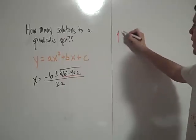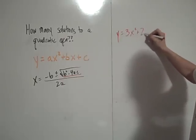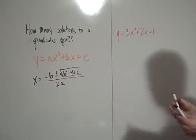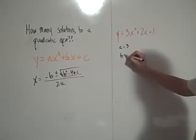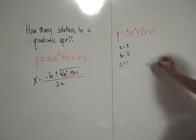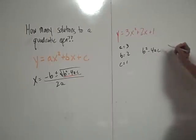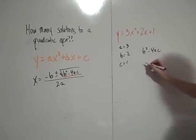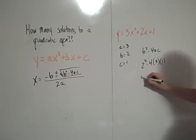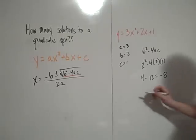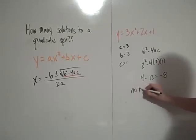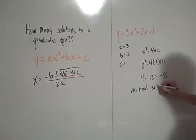So let's consider an example. Consider y equals 3x squared plus 2x plus 1. We need to find the discriminant. The a value is 3, the b value is 2, and the c value is 1. So the discriminant b squared minus 4ac is 2 squared minus 4 times 3 times 1, which is 4 minus 12, which is negative 8. And since the discriminant is negative, we say there are 0 real solutions.